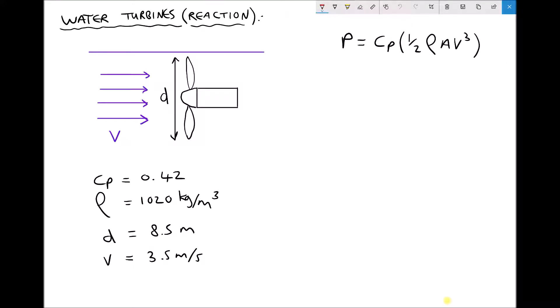In this video tutorial we're going to be discussing water turbines which are used to convert the kinetic energy of water into mechanical or electrical power. Now there's two different types of water turbine: we have reaction turbines and we have impulse turbines.